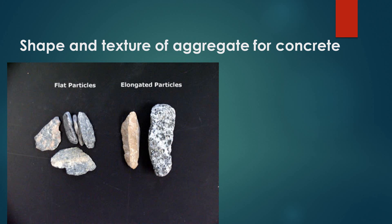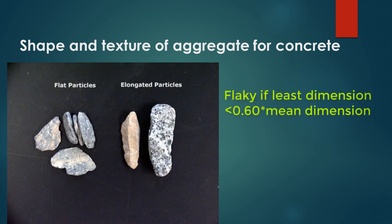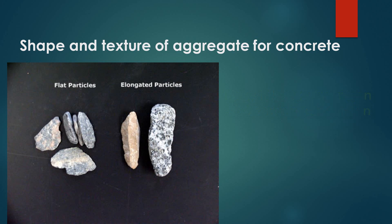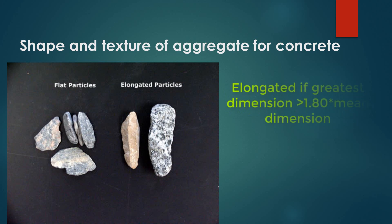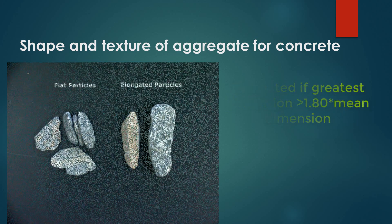Aggregates are considered flaky if the least dimension is less than three-fifths of their mean dimension. Aggregates are considered elongated if the greatest dimension is greater than nine-fifths of their mean dimension.